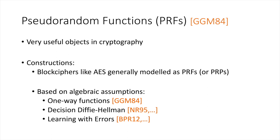We can also construct provably secure PRFs from specific algebraic assumptions. Using the classical result of Goldreich, Goldwasser, and Micali, we know how to construct PRFs from any one-way functions. We also know how to construct PRFs from the DDH assumption by the result of Naor and Reingold from 1995, and from the learning with errors assumption by the result of Banerjee, Peikert, and Rosen from 2012.